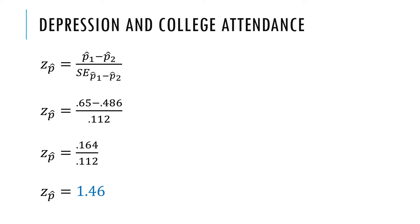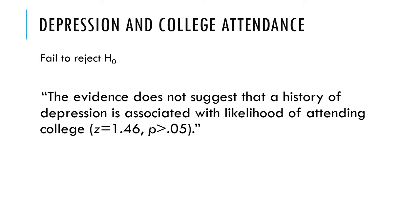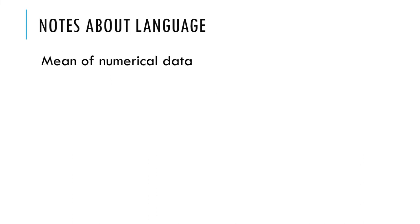So close — well, not that close. We needed a value less than -1.96 or greater than +1.96 to reject the null hypothesis. This value of 1.46 falls between the two critical values — it's in the middle of the curve, not in the rejection regions. So we do not reject the null hypothesis. The evidence does not suggest that a history of depression is associated with the likelihood of attending college. In parentheses: z = 1.46, p > 0.05.